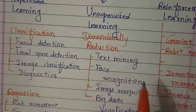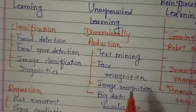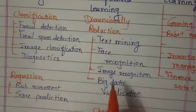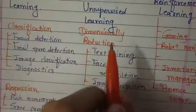Dimensional reduction is used for text mining, face recognition, image recognition, and big data visualization. This is the dimensional reduction.